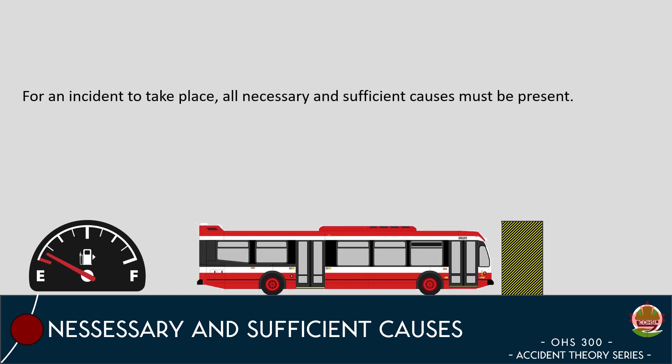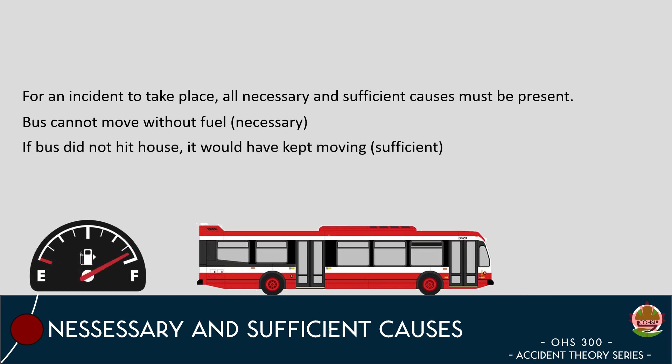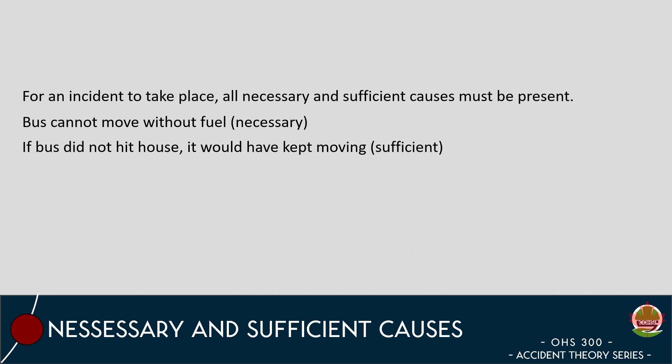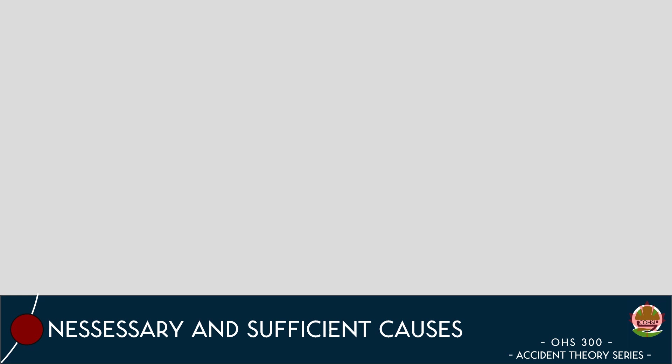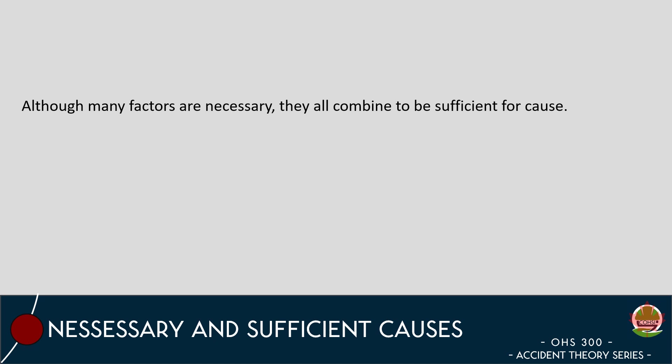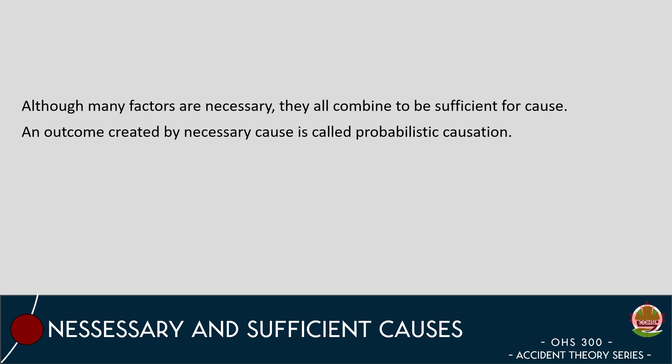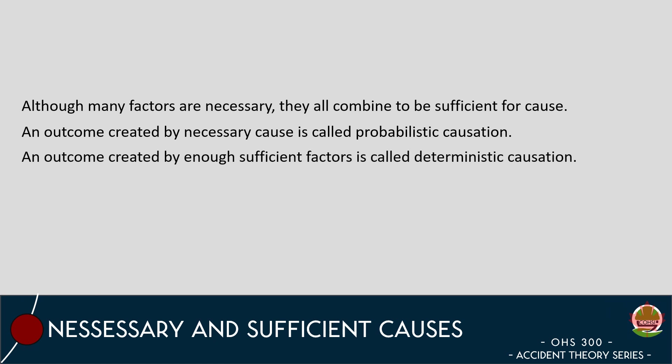For an incident to take place, all necessary and sufficient causes must be present, or the incident cannot take place. In our example with the city bus, if the bus did not have fuel, it would not have been able to propel forward, and if the house was not present, the bus would not have collided with it, and thus came to an abrupt stop. When conducting occupational health and safety investigations, many of the factors leading to an incident are deemed as necessary, but all these factors need to combine in order to generate a scenario that is sufficient to cause the incident. When investigating an incident, if the factors that created the outcome were only the necessary factors, it is referred to as probabilistic causation. However, if the factors that created the outcome were not necessary but were sufficient, it is referred to as deterministic causation.